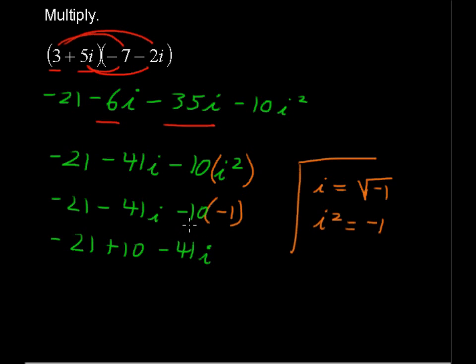I hope that didn't catch you off guard. I just wrote the plus 10 over here. Negative 21 plus 10 is negative 11. Negative 11 minus 41i.